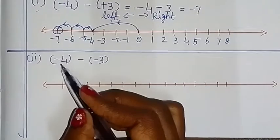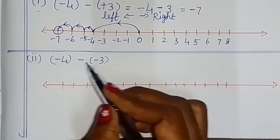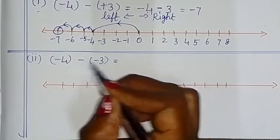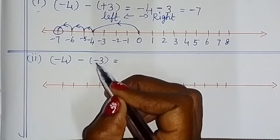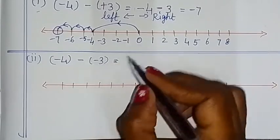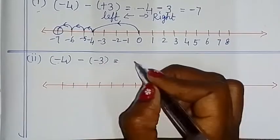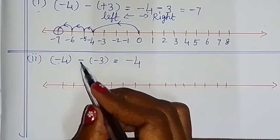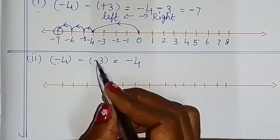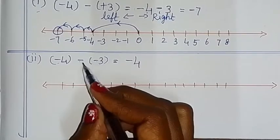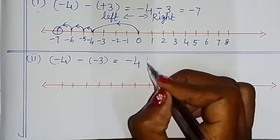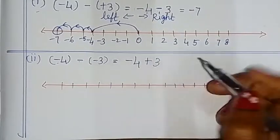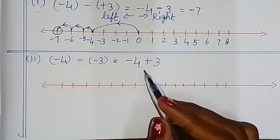Now: minus 4 minus of minus 3. Two symbols are available. First: minus 4. Two minus signs — integer multiplication rule: minus × minus = plus, so this becomes plus 3. Now we use the number line.